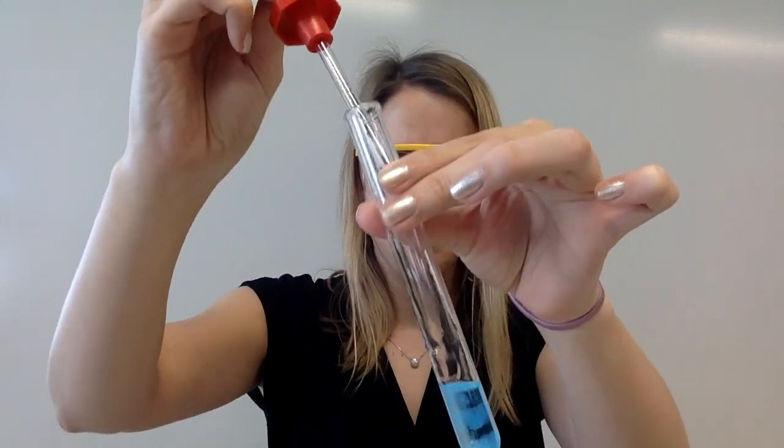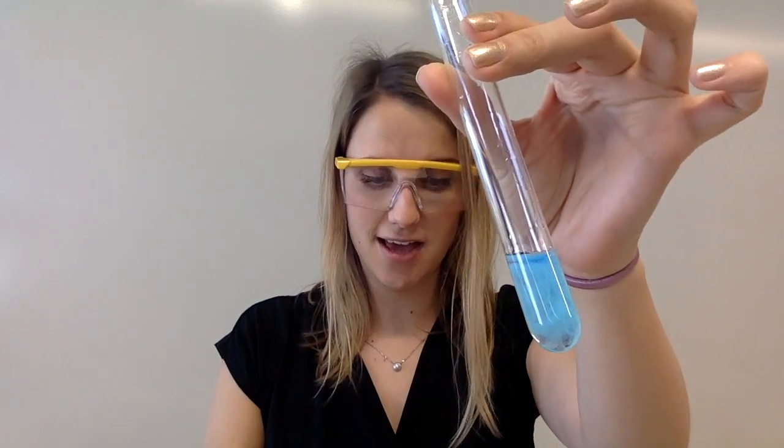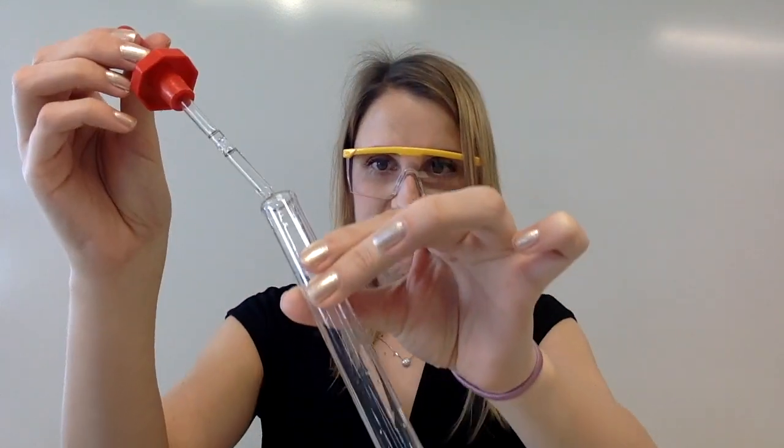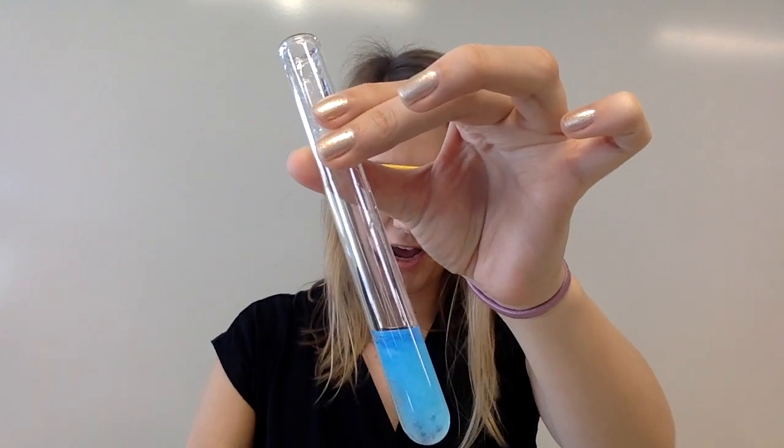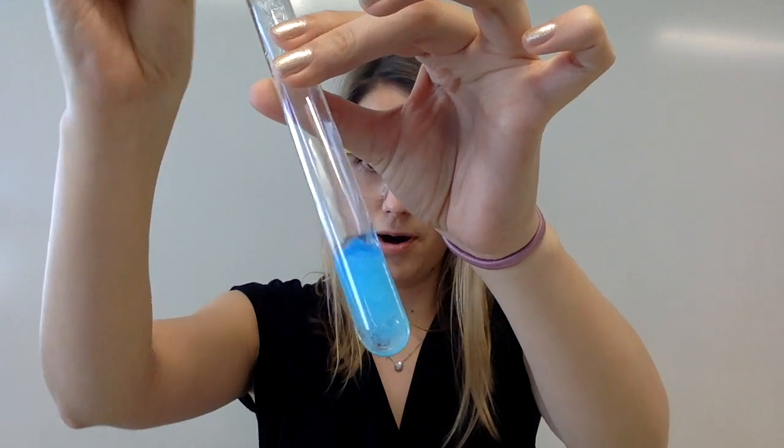So if I add a little bit of ammonia you can see you're still getting that light blue precipitate, but watch what happens as I add more and more ammonia.